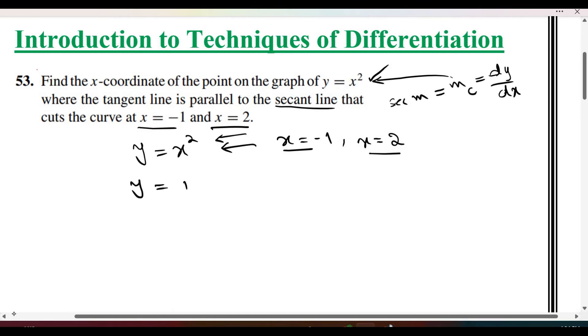Y is equals to minus 1 square is equals to 1. Agar x minus 1 hai, y ka hai 1. Agar x 2 hai, uska square, y is equal to 4.